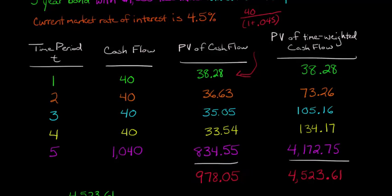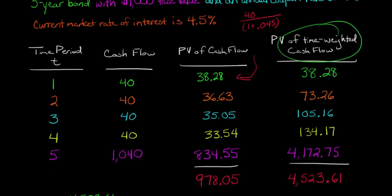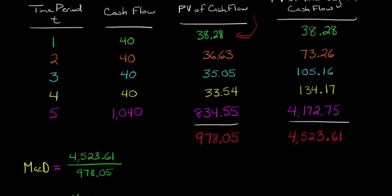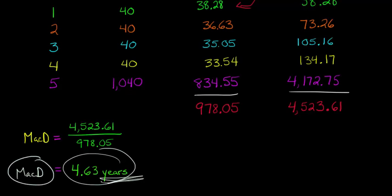So now, in order to calculate the Macaulay duration, what we're going to do is we're going to take the present value of the time-weighted cash flow and just divide it by the sum of the present value of the cash flows, which is the price of the bond. So we just take that $4,523.61, and we divide it by $978.05. Now, that's going to yield 4.63 years. Remember, we said that the Macaulay duration is expressed in terms of years.